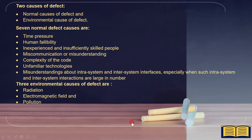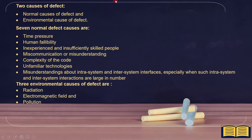Let's summarize all the points. We covered two causes of defects: normal causes of defect and environmental causes of defects. In the syllabus, we have seven normal defect causes: time pressure, human fallibility, inexperienced and insufficiently skilled people, miscommunication or misunderstanding, complexity of the code, unfamiliar technologies, and misunderstandings about intrasystem and intersystem interfaces, especially when such interactions are large in number. The three environmental causes of defect are radiation, electromagnetic field, and pollution.